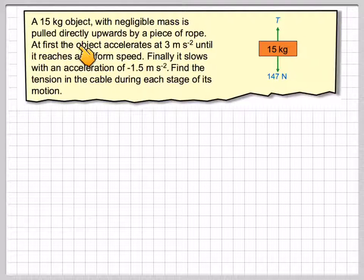A 15 kilogram object with negligible mass is pulled directly upwards by a piece of rope. At first, the object accelerates at 3 metres per second squared until it reaches a uniform speed. Finally, it slows down with an acceleration of minus 1.5 metres per second squared. Find the tension in the cable during each stage of its motion.